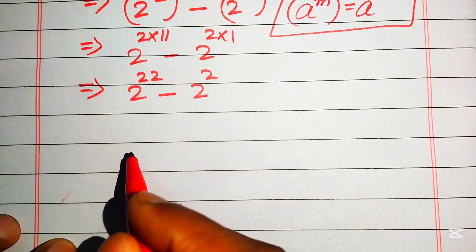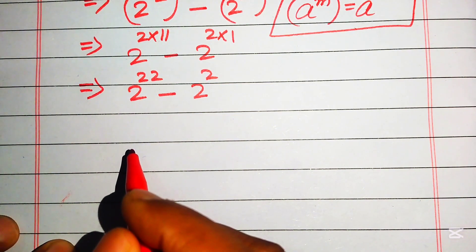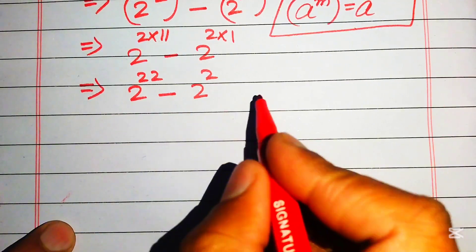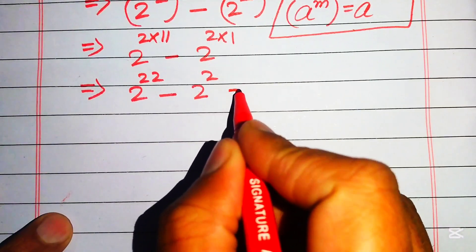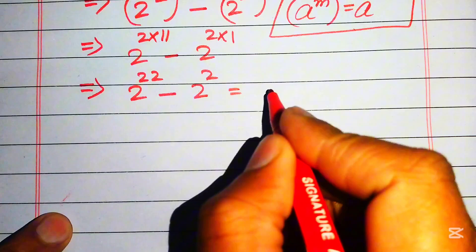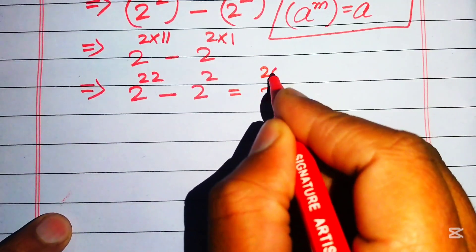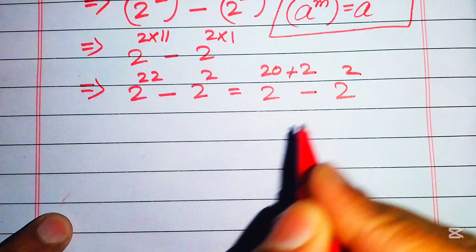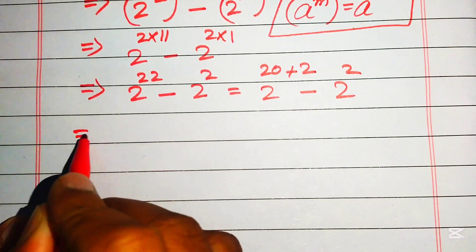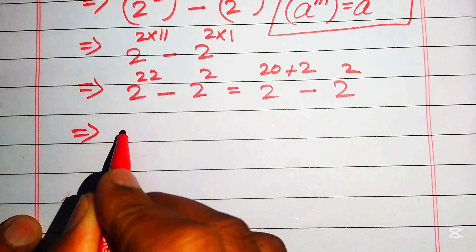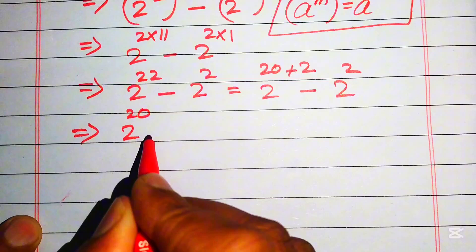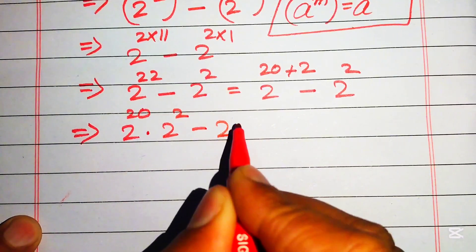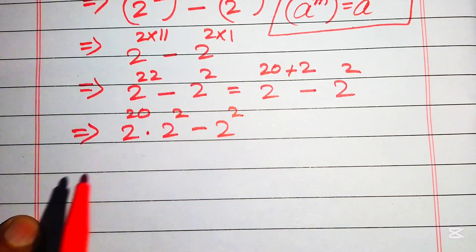So we rewrite the expression. We write 22 as 20 plus 2, giving us 2 to the power of 20 plus 2, minus 2 to the power of 2. We break this exponent and write it as 2 to the power of 20, times 2 to the power of 2, minus 2 to the power of 2.